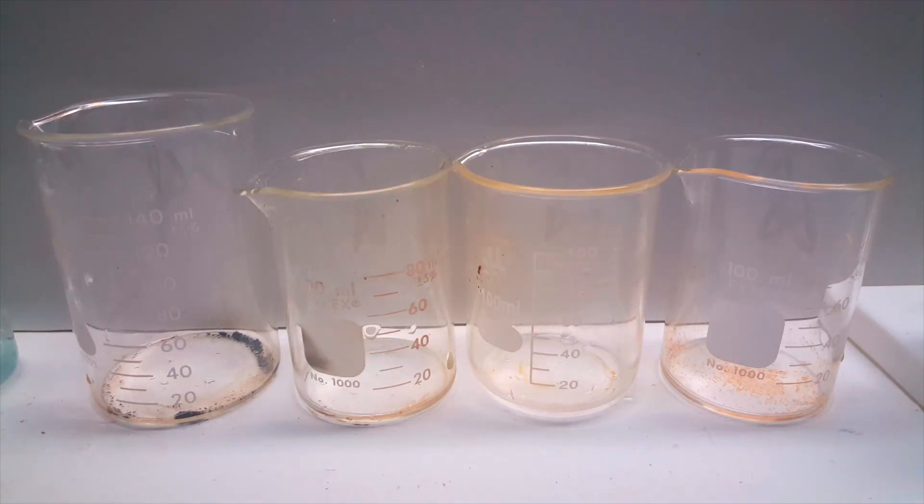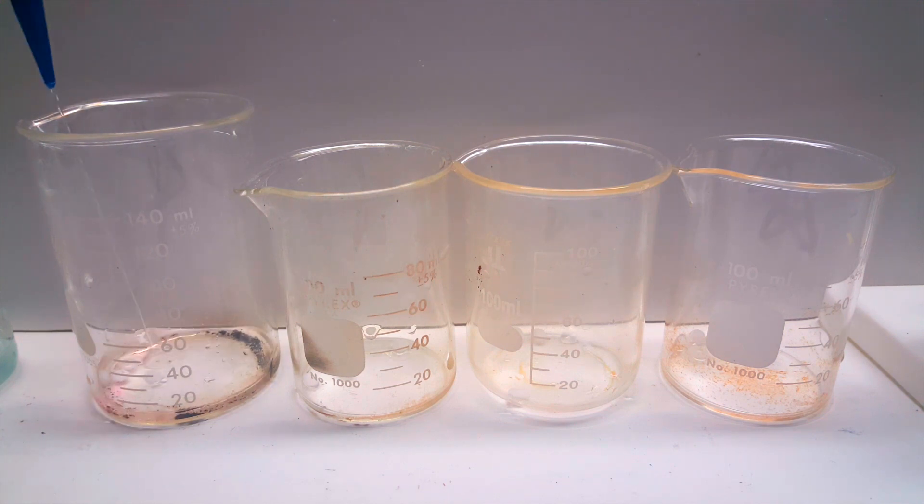In beakers 3-6, there appeared to be some sort of organic contamination in each. I figured I could use a strong base, sodium hydroxide, to clean this up. So, to each beaker, I added a couple of pellets of sodium hydroxide, and made a solution by adding a little bit of water.